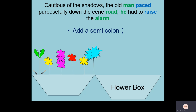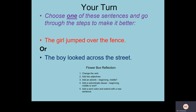Now it's your turn. Choose one of the sentences on the board — either 'the girl jumped over the fence' or 'the boy looked across the street.' I've included the flower box reflection guide for you to go through the process to turn that simple sentence into something more complex. Press pause now and run through that, taking the simple sentence and making it into a complex sentence.